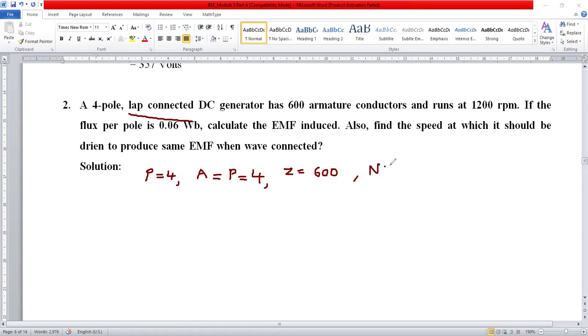The speed of rotation is 1200 rpm. The flux per pole is 0.06 weber. Calculate the EMF induced. This is the first part of the problem.